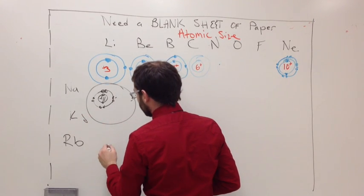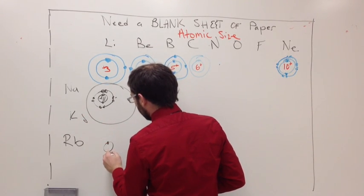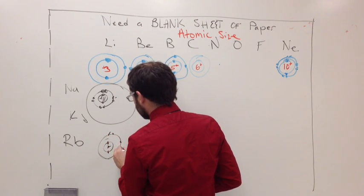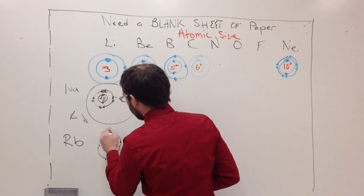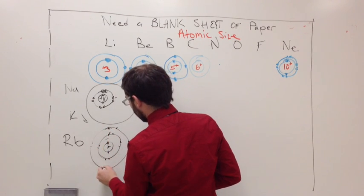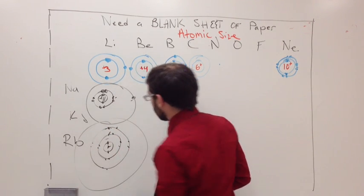Same thing is true with potassium. Then potassium would have one ring. This is K. It's going to have the second ring with all of its electrons. And then it's going to have a third ring, the same as right above it, sodium. And then it's going to have a fourth ring. And it's going to be even bigger.